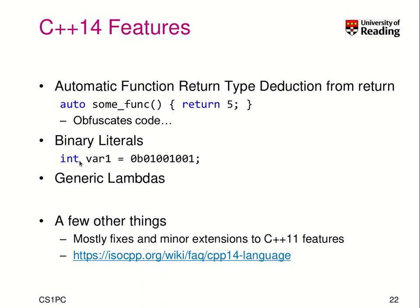We can also define binary literals — the individual bits of an integer. You can say var1 = 0b followed by the bit pattern, where 0b indicates binary. There are also more concepts around lambdas — lambdas are now extended with more capabilities. There were mostly fixes and minor extensions to C++11 features.